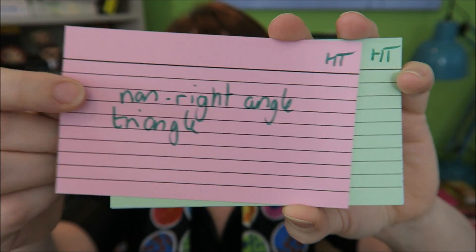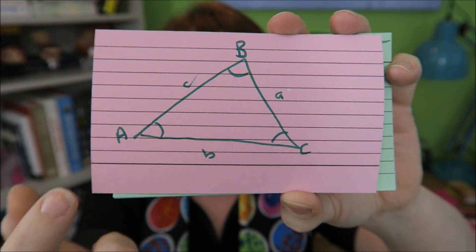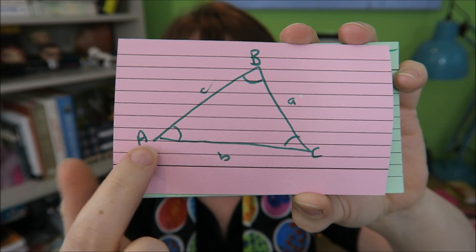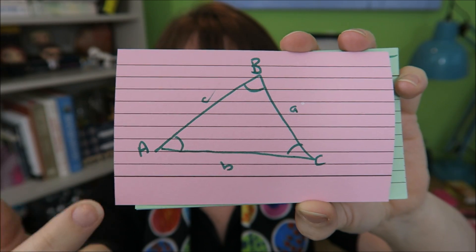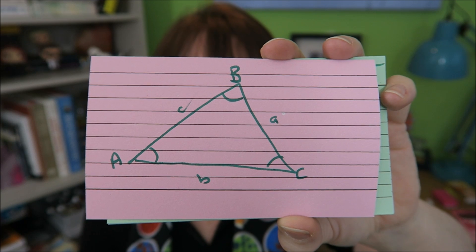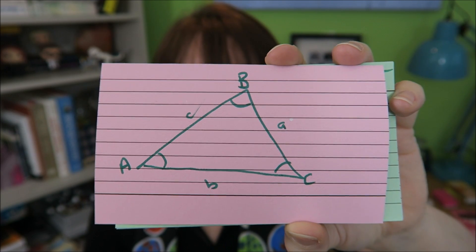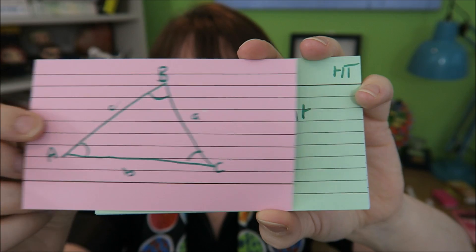Labelling a non-right angled triangle. We need to have opposites: A, B, and C. Big letters for the angles, little letters for the edges. This is important to get it the right way around.